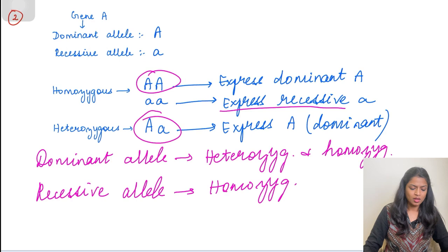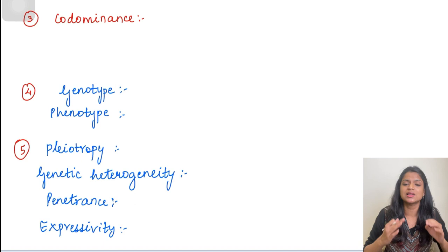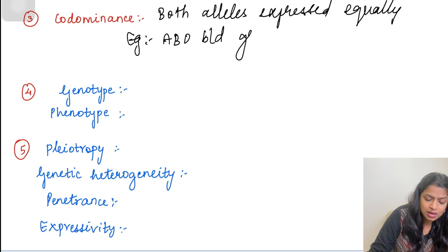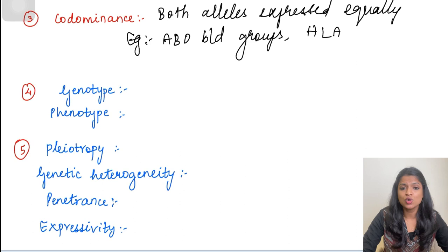Moving on, there is something called co-dominance, in which both alleles express themselves in equal amounts. Examples of co-dominance are human ABO blood groups and HLA — human leukocyte antigen. Both of these are examples of co-dominance.